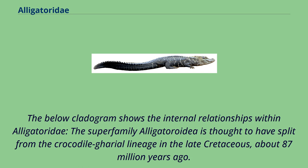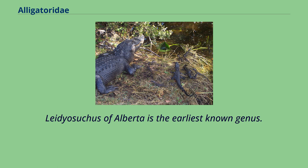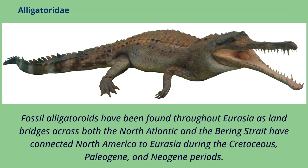The superfamily Alligatoroidea is thought to have split from the crocodile-gharial lineage in the late Cretaceous, about 87 million years ago. Leidyosuchus of Alberta is the earliest known genus. Fossil alligatoroids have been found throughout Eurasia, as land bridges across both the North Atlantic and the Bering Strait connected North America to Eurasia during the Cretaceous, Paleogene, and Neogene periods.